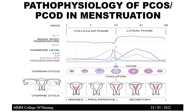Looking at the hormonal level: FSH (follicle stimulating hormone), shown in blue, remains the same throughout the first 14 days with a slight increase at day 14, then returns to normal. LH (luteinizing hormone), shown in pink, is used to detect ovulation through blood test. From day 1 to day 14 there is no increase, but at day 14 there is the highest peak of LH — indicating ovulation. After that it returns to normal. Estrogen, shown in black, rises just before ovulation, creating fluctuation. During the luteal phase, progesterone increases significantly.